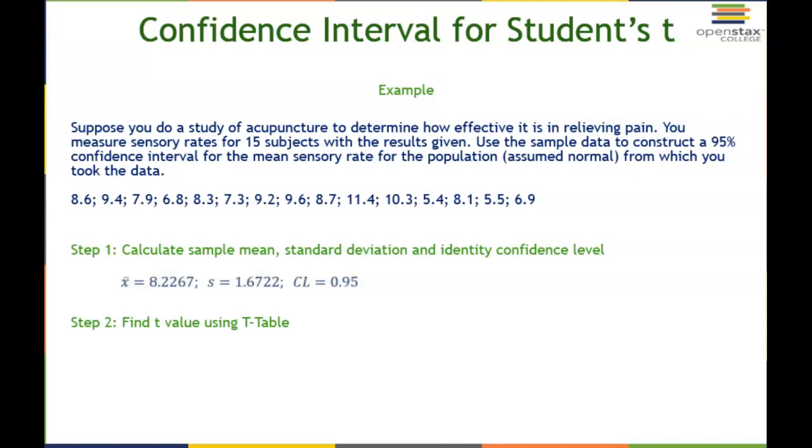Second step, we need to find our t value using a t-table. To use the t-table, I need two things: the confidence and the degree of freedom. The degree of freedom equals n minus 1, so 15 minus 1 is 14.